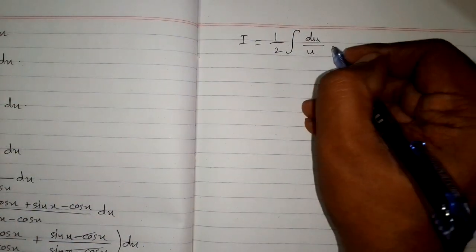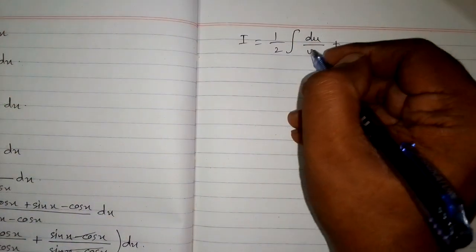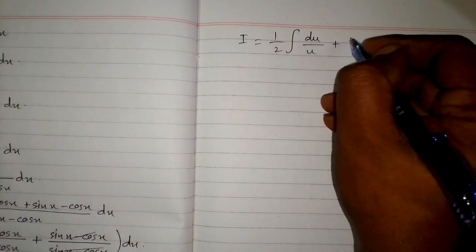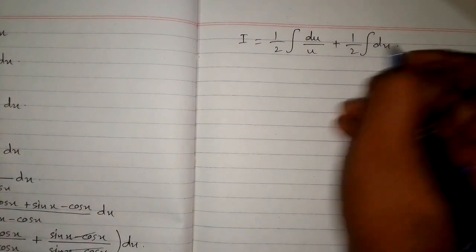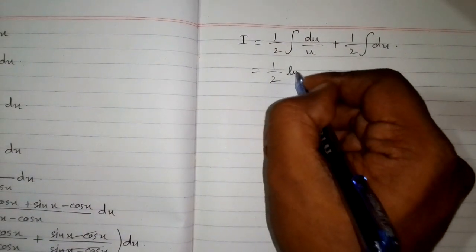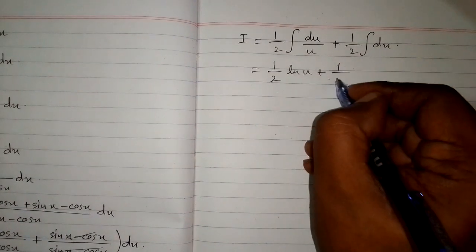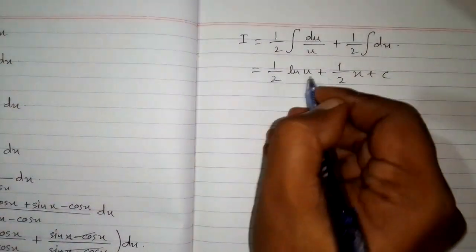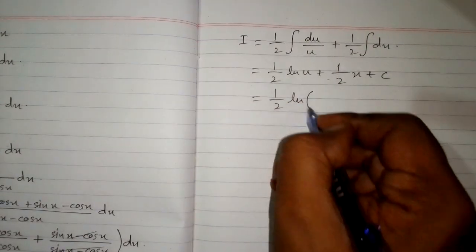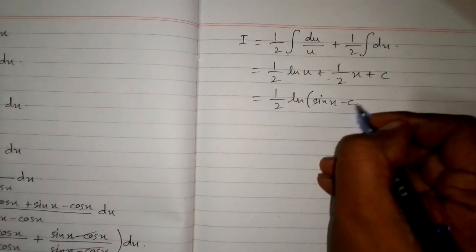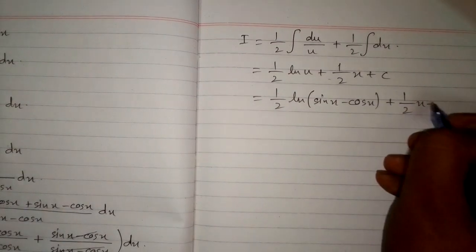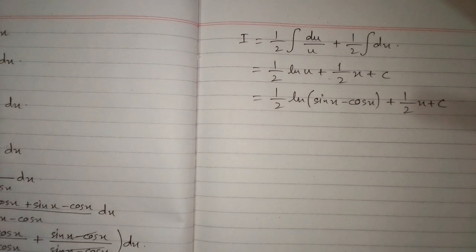So integral I equals one half integral of du upon u, plus one half integral of dx. The integral of du upon u is ln of u, and the integral of dx is x plus c. Now substituting back the value of u, we have I equals one half ln of sin x minus cos x plus one half x plus c, and this is the required answer.